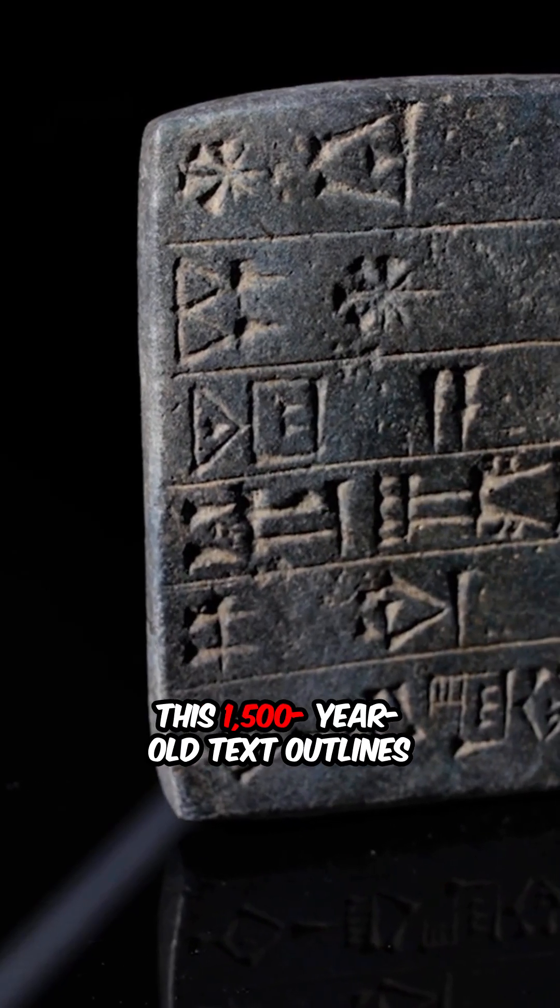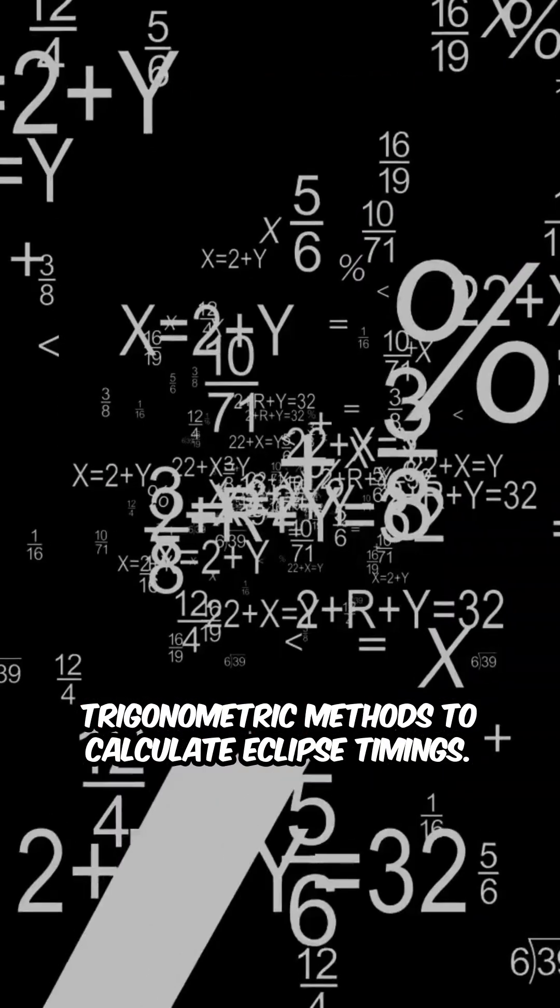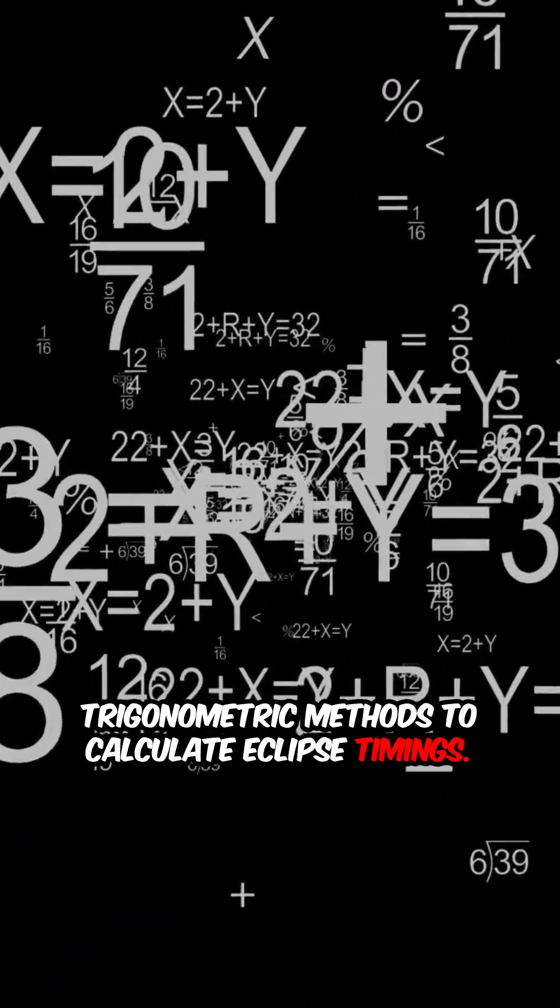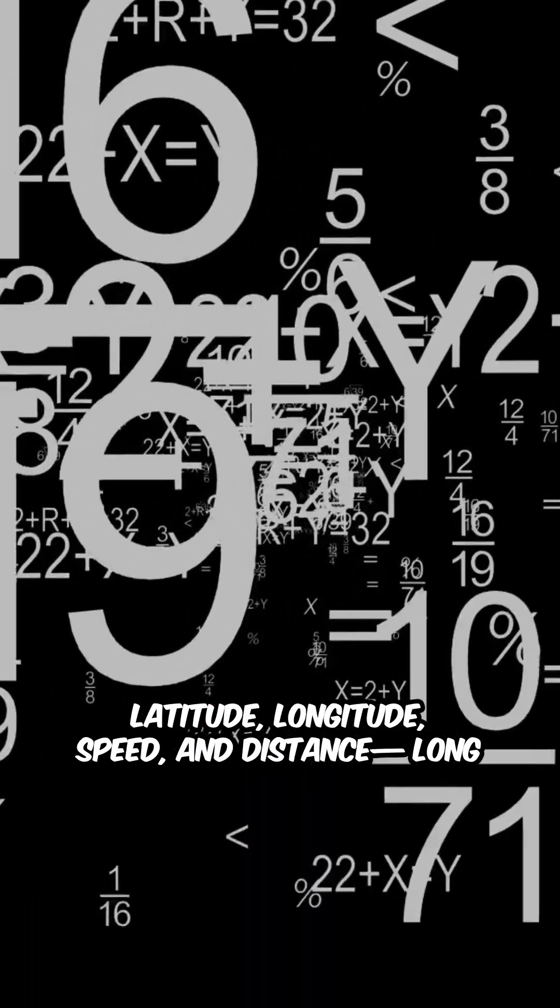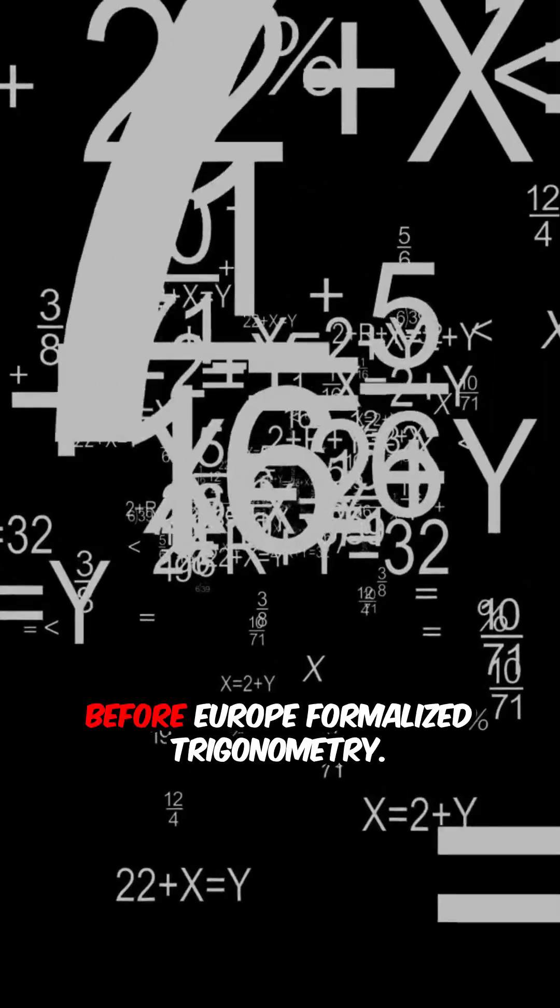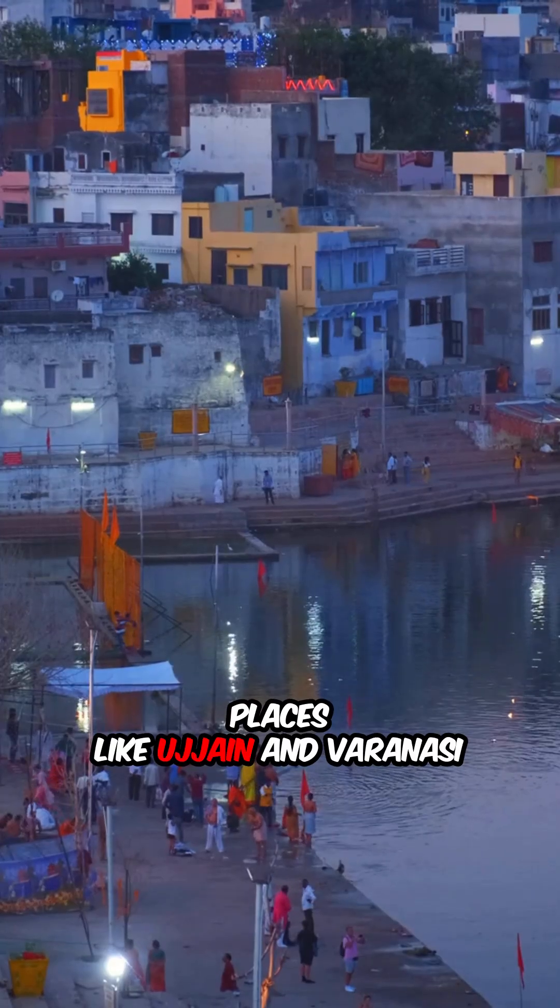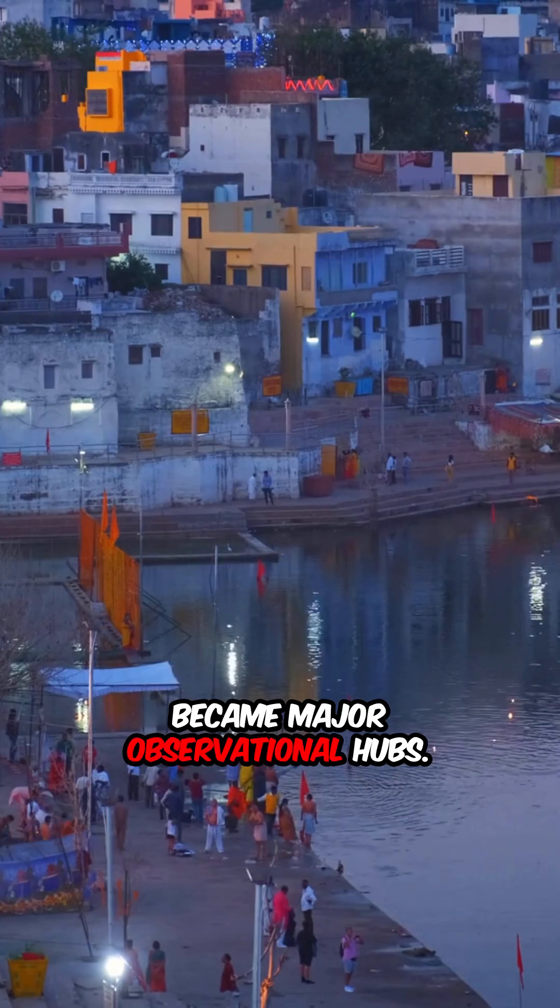This 1500-year-old text outlines trigonometric methods to calculate eclipse timings. It includes formulas for the moon's latitude, longitude, speed, and distance. Long before Europe formalized trigonometry, places like Ujjain and Varanasi became major observational hubs.